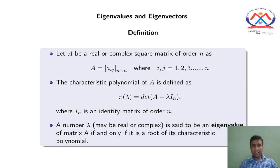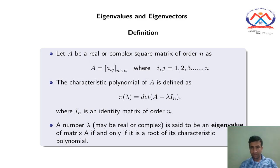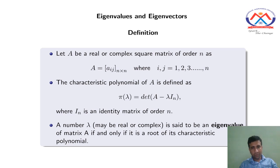The number λ, which we have used in the definition of the characteristic polynomial det(A − λI), and which could be real or complex, is said to be an eigenvalue of the matrix A provided it is a root of its characteristic polynomial. That is, we find the characteristic polynomial det(A − λI), then find the roots of that polynomial — real or complex — which are known as the eigenvalues.